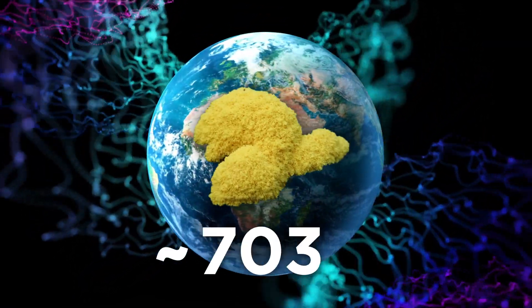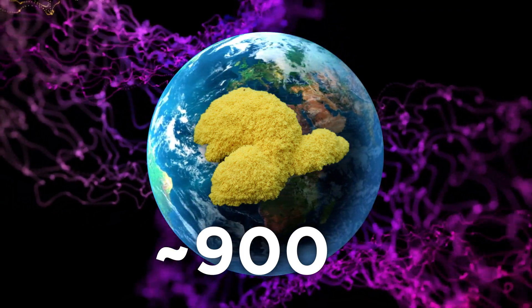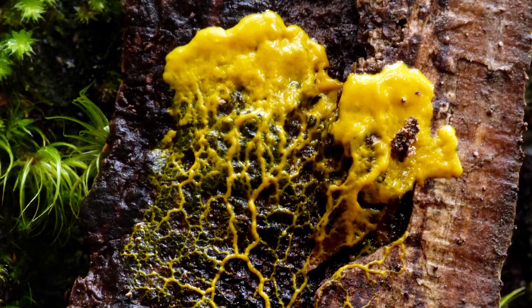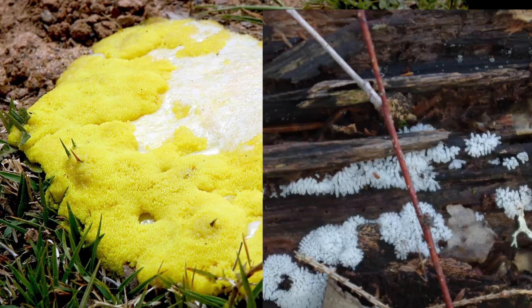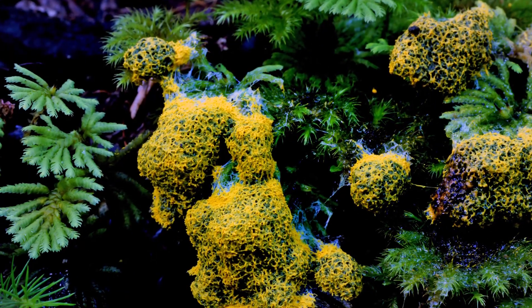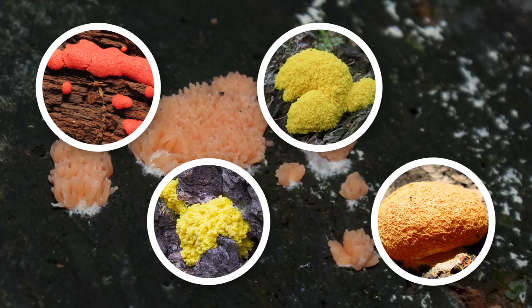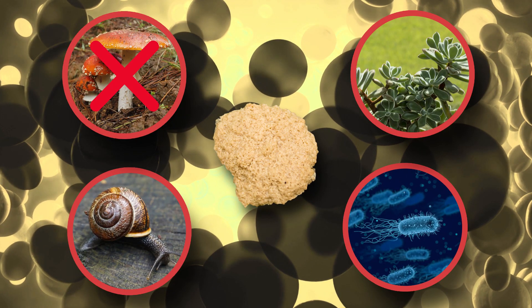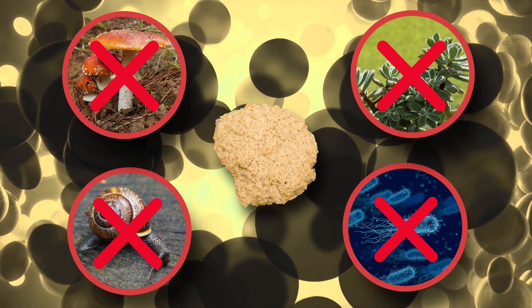There are around 900 known species of slime mold on Earth, and these amoeba-like life forms usually live in moist terrestrial habitats, like forest floors and decaying wood. Interestingly, despite the bright fungal appearance of certain varieties, slime mold is not a fungus, nor is it a plant, an animal, or a bacteria.